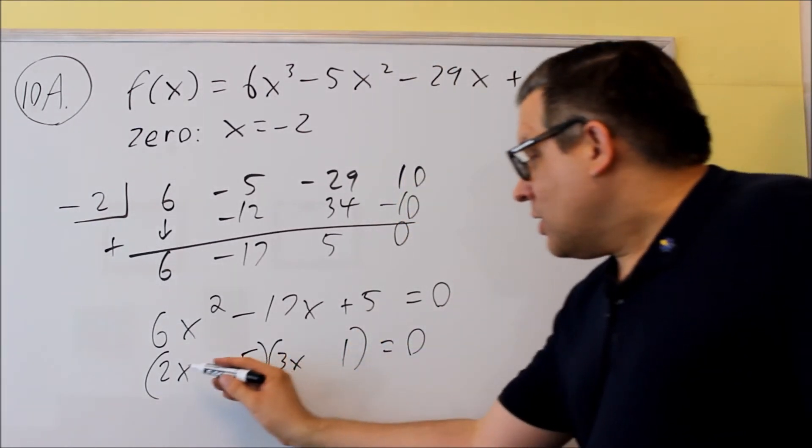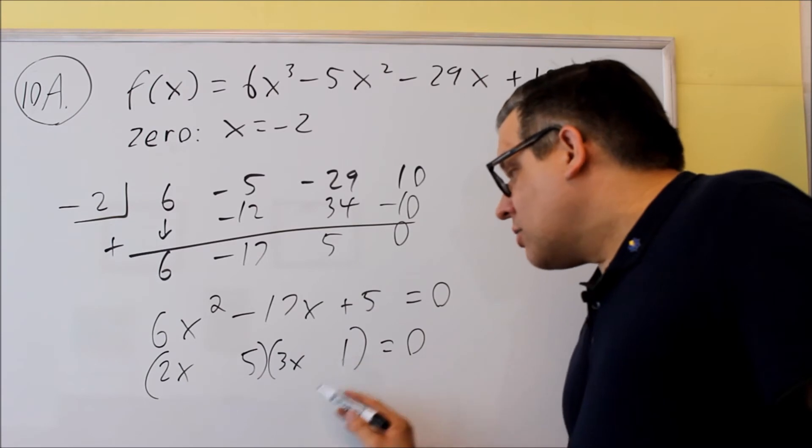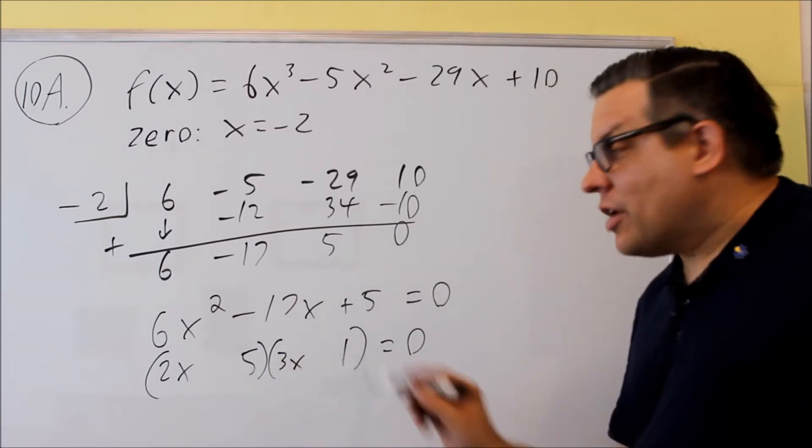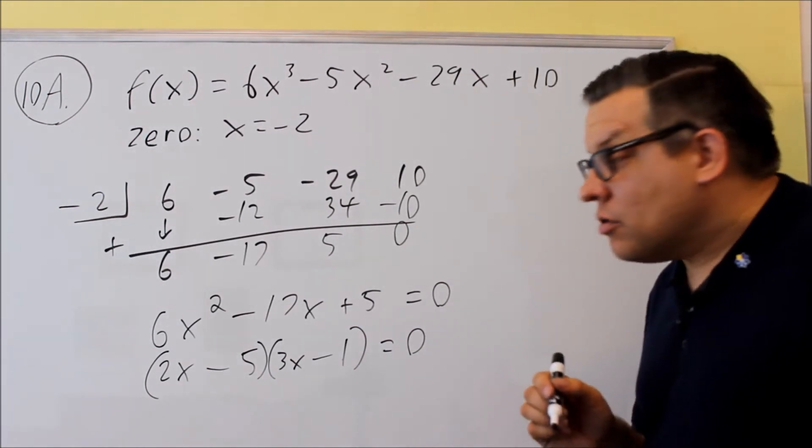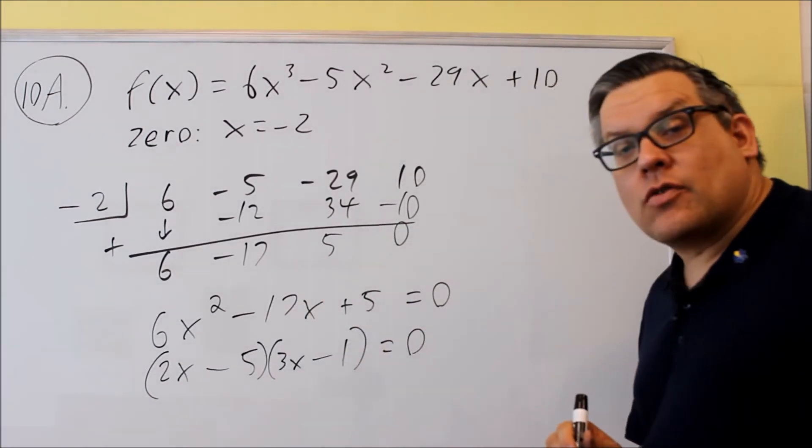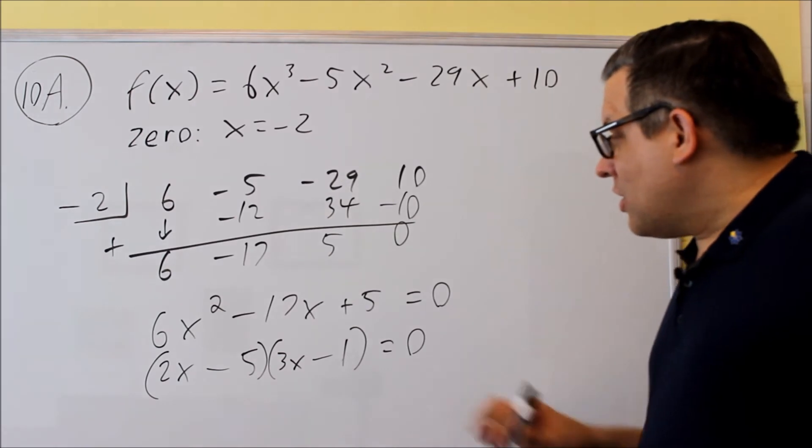Okay, I'll get 2x and 15x, that will give me 17. If I make these both negative, then it'll add up to negative 17, and negative 5 and negative 1 gives you positive 5.